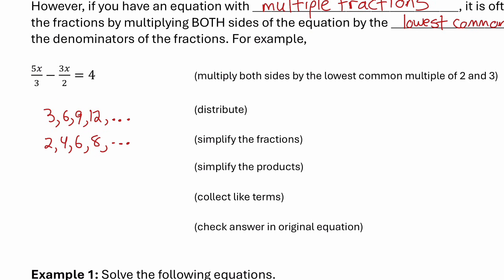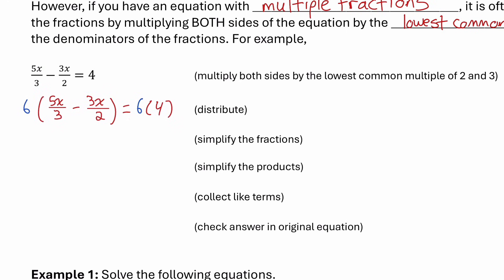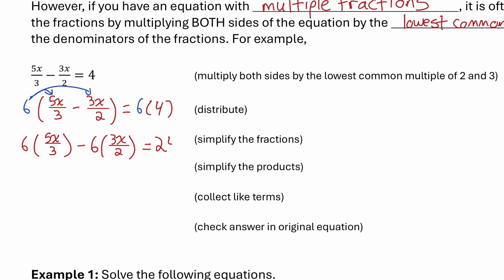So I'm going to multiply both sides of the equation by 6. These brackets on the left are important so that the entire left side gets multiplied by 6. I have to distribute that 6 to both of the terms in the brackets: 6 multiplied by 5x over 3, minus 6 times 3x over 2. And on the right side, 6 times 4 is 24.